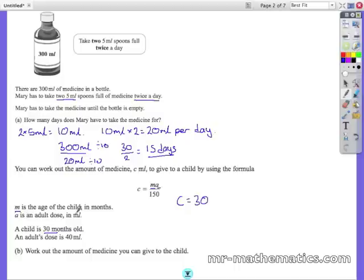So C equals 30 times A, which is the adult dose 40 millilitres. So 30 multiplied by 40 over 150. Working that out becomes C equals 1200 over 150. We will divide out the 10 so 120 over 15.